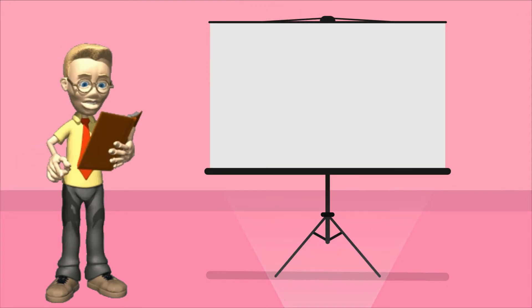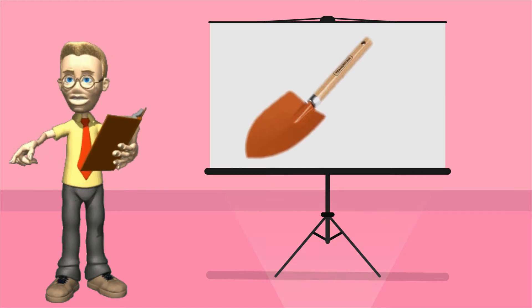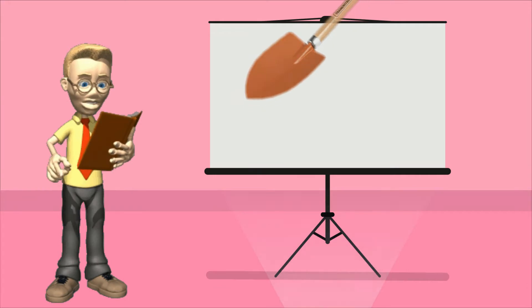Next is trowel. A tool with curved blade used for loosening the ground and taking up small plants.